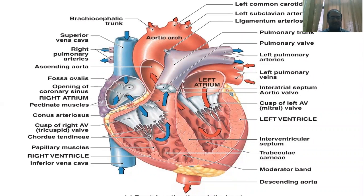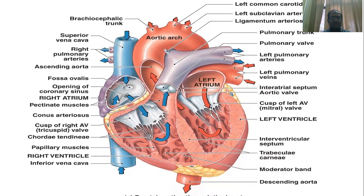In this picture, there are many other things that you can see. You can see the coronary sinus. The coronary arteries are visible, and the coronary veins are visible. This is the connection of the atrium and ventricle, called the atrioventricular junction. These fibers are called chordae tendineae.